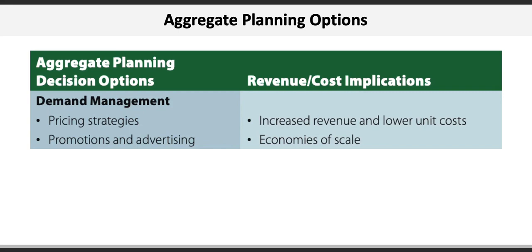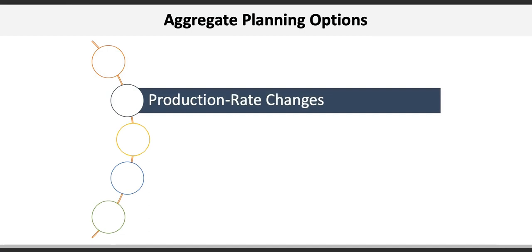Production rate changes include decisions around overtime, under time, and subcontracting in efforts to reduce the labour cost of production. Revenue and cost implications include high labour costs, idle time, lost opportunities, and additional overhead.